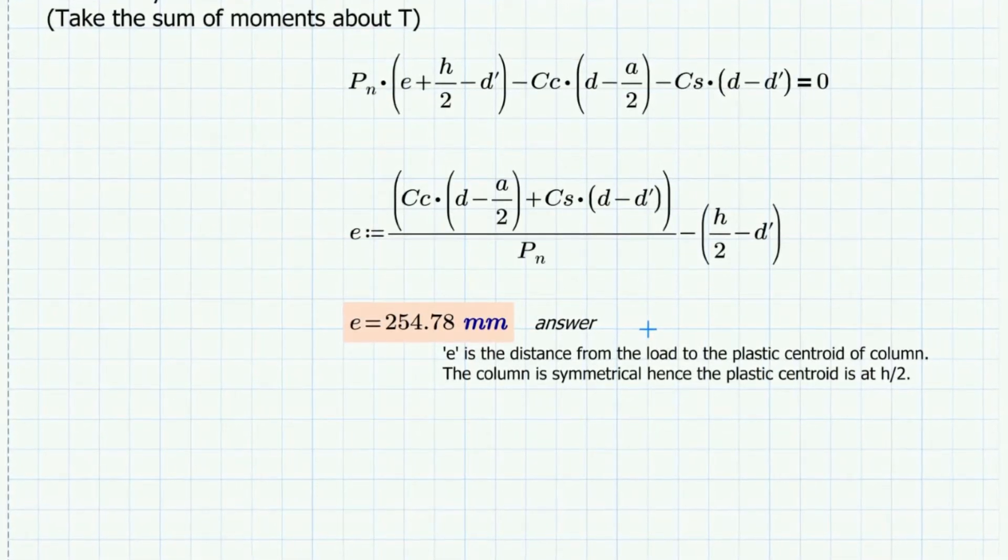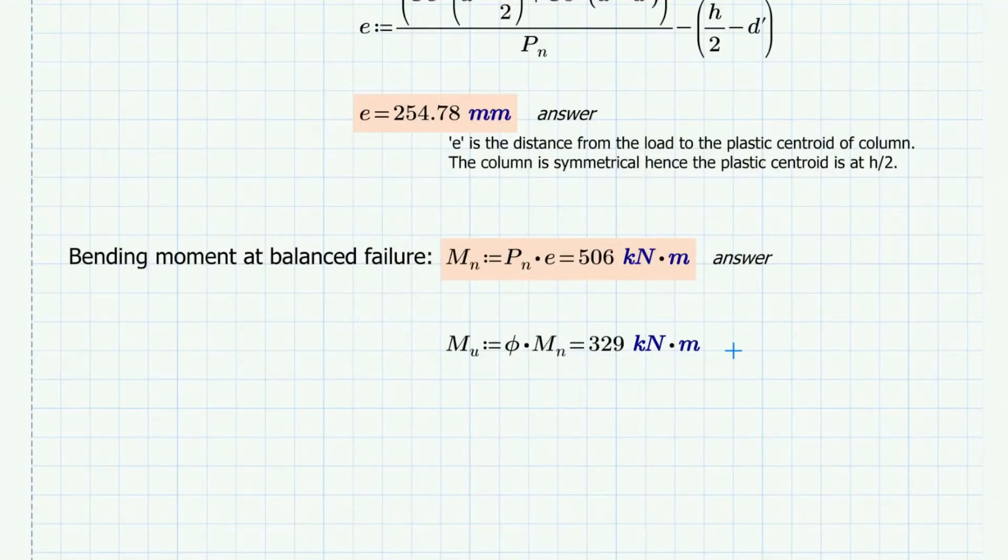Finally, to calculate the nominal bending moment, we just need to multiply the axial strength Pn times the eccentricity. We also can get the ultimate bending moment by multiplying with the strength reduction factor.